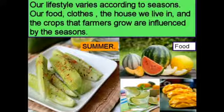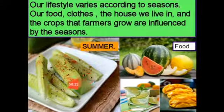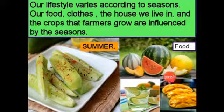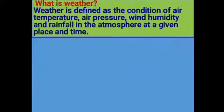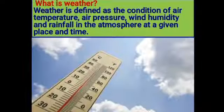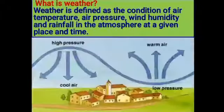For example, the foods we enjoy in summer are spicy cucumber, watermelon, musk melon, lemon water, and mango. Now, what does weather really mean? Weather is defined as the condition of air temperature, air pressure, wind, humidity, and rainfall in the atmosphere at a given place and time.